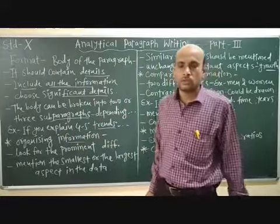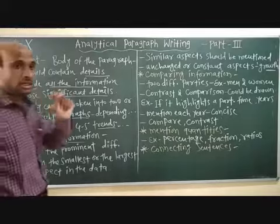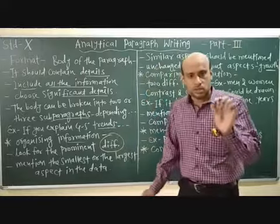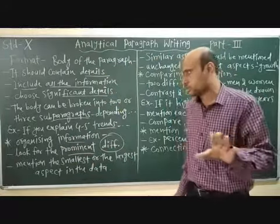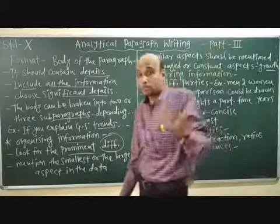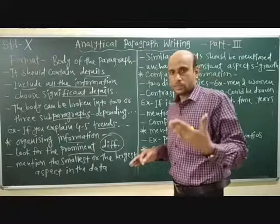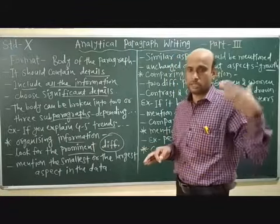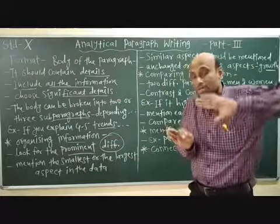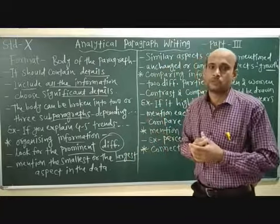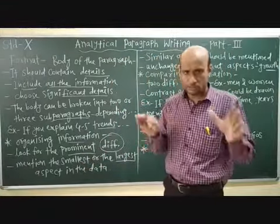Organize the information in your body by looking for the prominent differences — only the main, prominent points, because there is no space for everything. You need to find out what is the smallest and what is the largest in the data — the prominent information. Look for the prominent aspects: the smallest one, the largest one, similar points, and contrasting points.